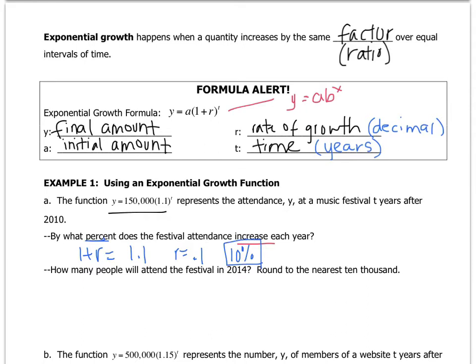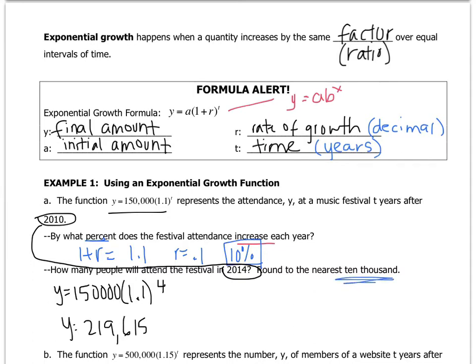Now they want to know how many people attended the festival in 2014. Well, if it started in 2010, how many years have passed to get to 2014? So that's four years. So you take your formula. But instead of t, you put 4. And grab your calculator. Let's power them up. 1.1 to the fourth times 150,000 is 219,615 people. But be careful, they want it to the nearest 10,000. So that's this place value right here. So the answer is 220,000 people.